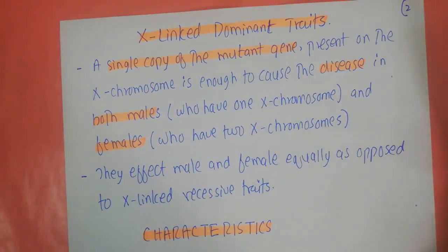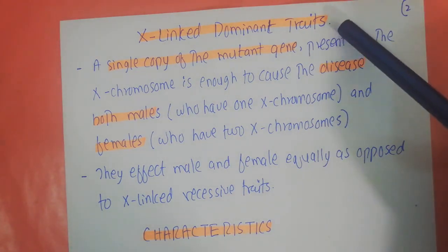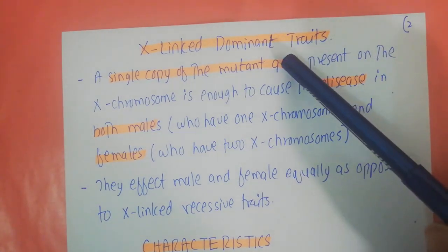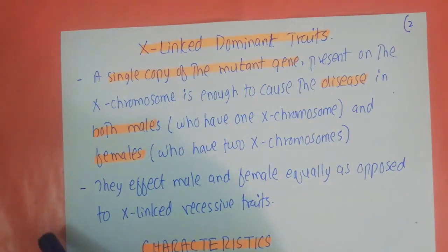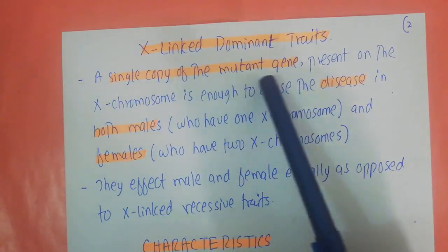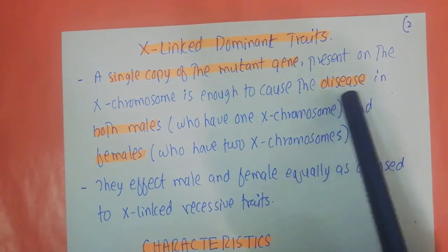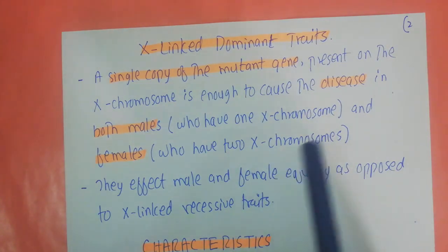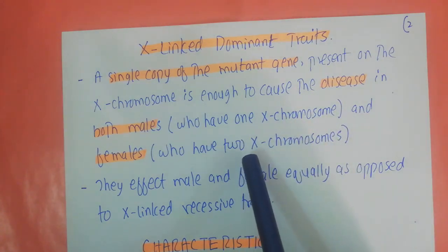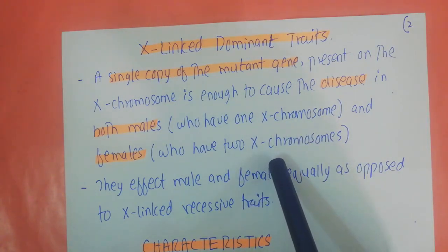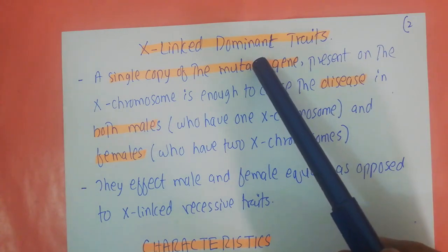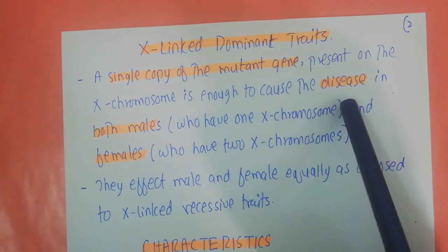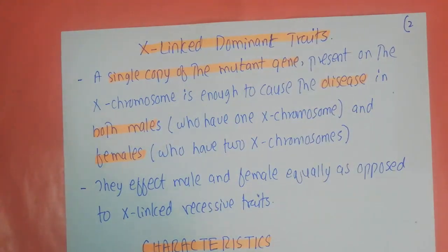X-linked inheritance can be present in two forms: X-linked dominant traits and X-linked recessive traits. In this video we will discuss X-linked dominant traits. An X-linked dominant trait is one where a single copy of the mutated gene on the X chromosome is enough to cause disease in both males (who have one X chromosome) and females (who have two X chromosomes). The dominant trait expresses itself even with a single copy.